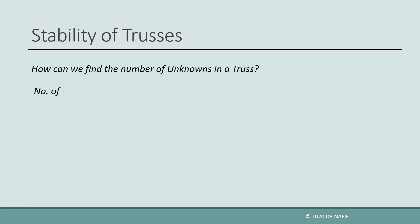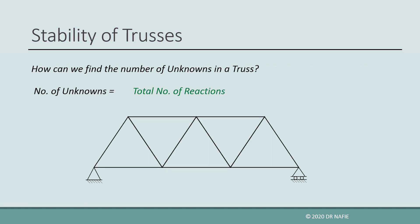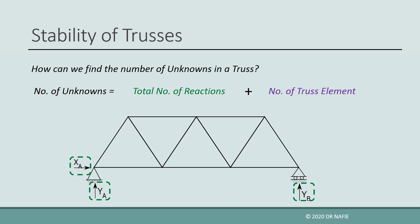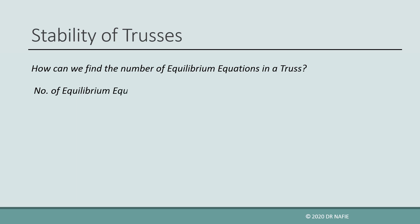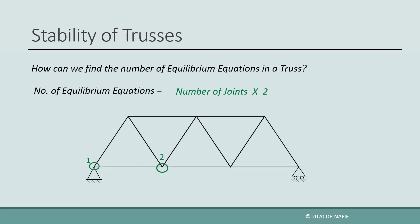So how can we find the number of unknowns in a truss? The unknowns are classified into external unknowns, which are the support reactions, and internal unknowns. The number of internal unknowns is equal to the number of truss elements. To solve for the unknowns, equilibrium equations must be generated. The number of equilibrium equations in a truss is evaluated by counting the number of joints and multiplying this number by two.